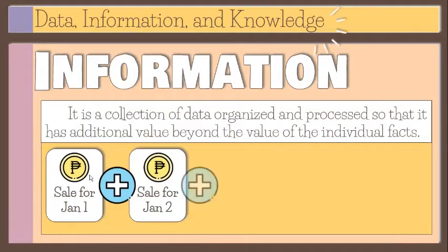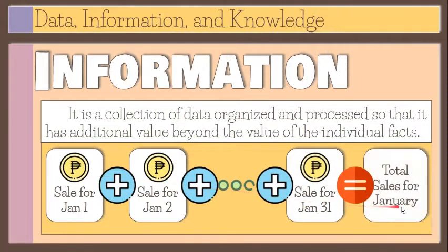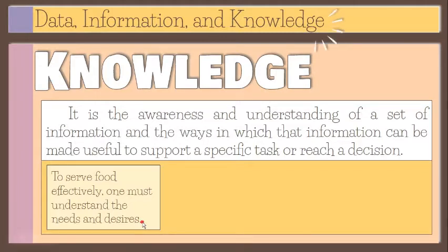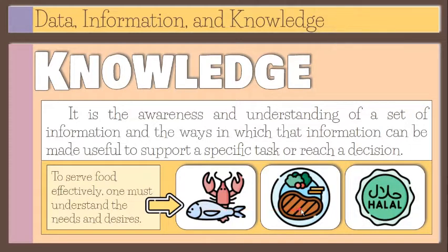Valuable information can help people perform tasks more efficiently and effectively. For example, a sales manager may want individual sales data summarized so it shows the total sales for the month. The process of defining relationships among data to create useful information requires knowledge, which is the awareness and understanding of a set of information and the ways in which that information can be made useful to support a specific task or reach a decision. We can say that information is essentially data made more useful through the application of knowledge.